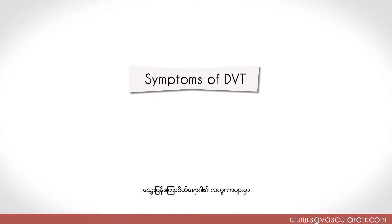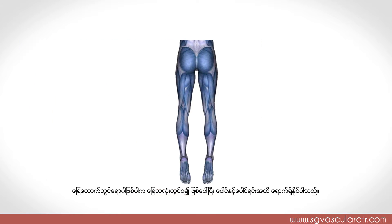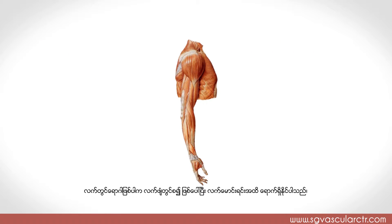Symptoms of DVT: patients with DVT can present with a swollen and tender limb. In the legs, it may start in the calf and then extend towards the thigh and groin. In the upper limbs, it can start in the forearm and extend upwards.